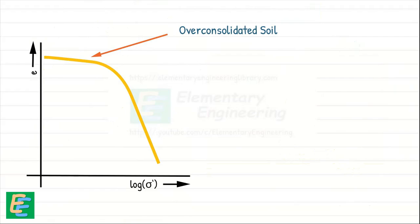In the steeper part, the soil is in normally consolidated state. When the soil changes from over-consolidated to normally consolidated state, the curve exhibits a transitional range that appears as a distinct knee or inflection point.